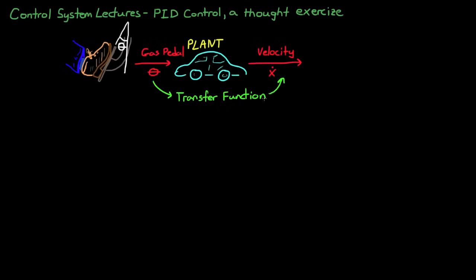We need a transfer function from the gas pedal position to the velocity of the car. Now in real life this is a complicated non-linear transfer function that's dependent on the car model. However, you can simplify this model by assuming it's just a first order low-pass filter. And the transfer function for a low-pass filter looks like this, where the output is velocity and the input is angle.